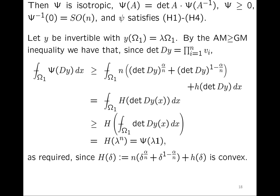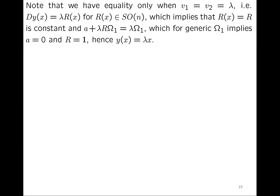Equality holds only when all singular values are equal to λ, i.e., Dy(x) = λR(x), and since such a gradient must be a constant rotation, y(x) = λx for generic Ω₁, implying R is the identity. So the unique minimizer is the magnification. This is quite satisfactory.